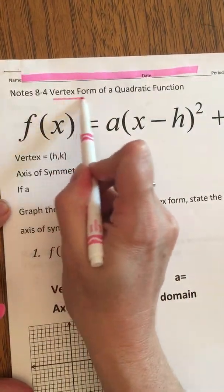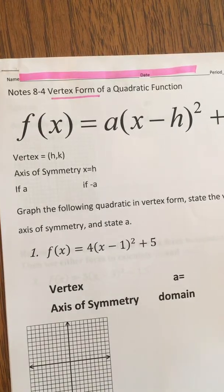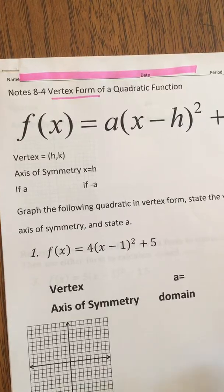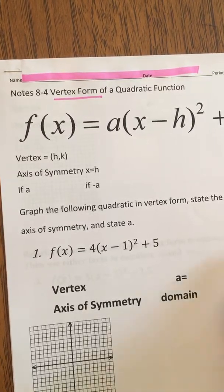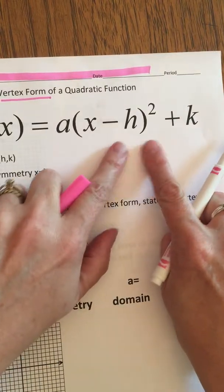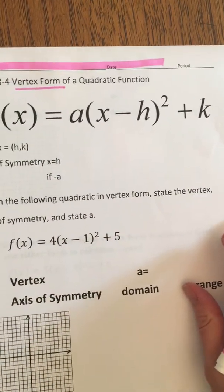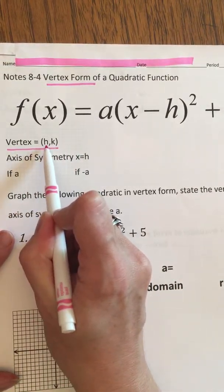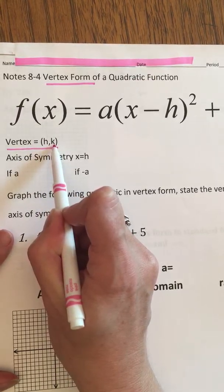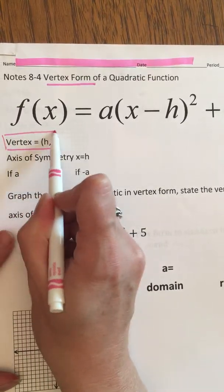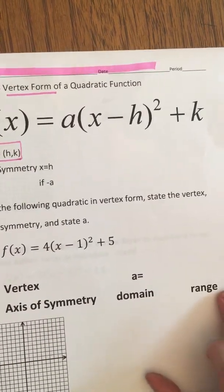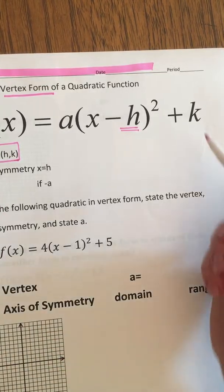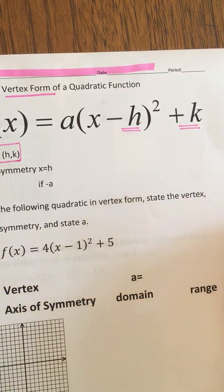The vertex form of a quadratic function does exactly what the name says it's going to do. The function in its setup shows you the vertex of the quadratic, which is really nice. So this is our vertex form. And what we see is that the vertex itself is going to be the two numbers of h and k, this one coordinate point of h and k. So the h comes from right here inside of the parentheses contained with the x, and the k is tacked on at the very end.